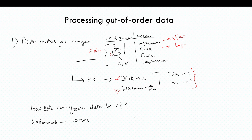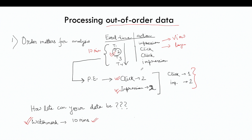Now, how to handle this kind of out-of-order data? In Spark, we have a concept of watermarking. You need to ask the business: how late can your data be? For example, if you want to aggregate incoming events, you tell the engine that data can be late by 10 minutes and that is acceptable. The Spark streaming engine will maintain state, wait until the watermark time, and then correctly aggregate the result.